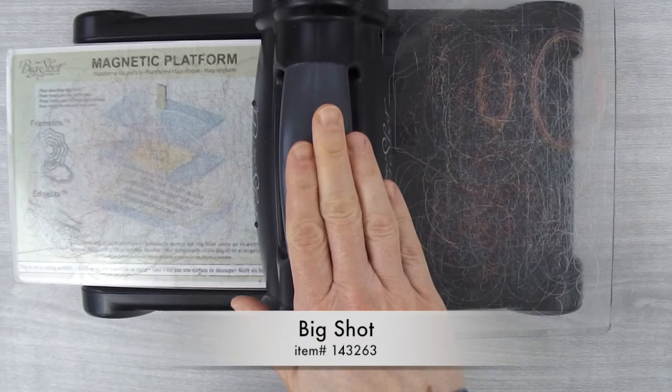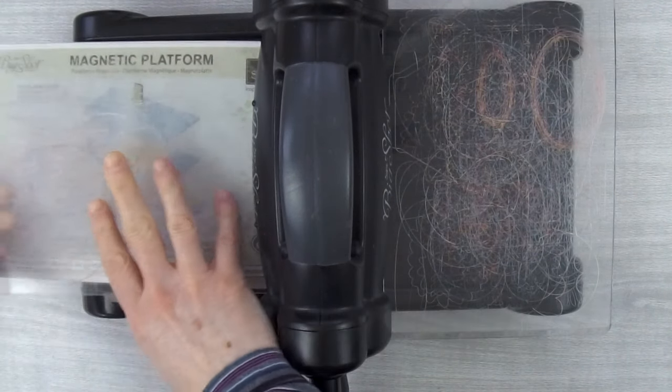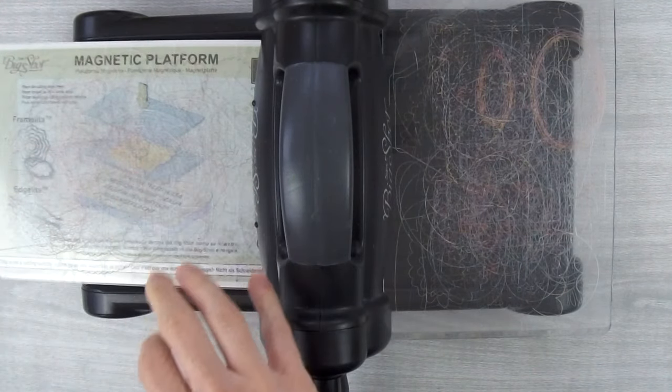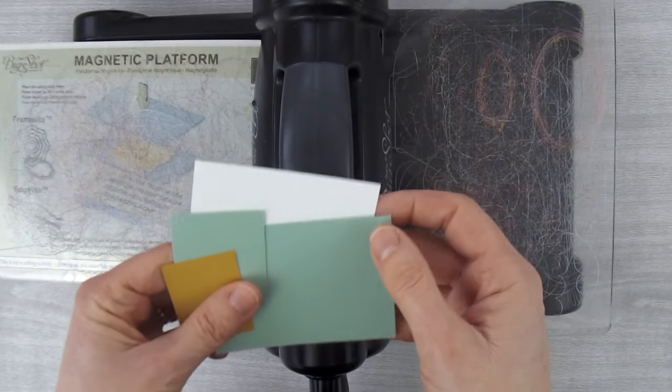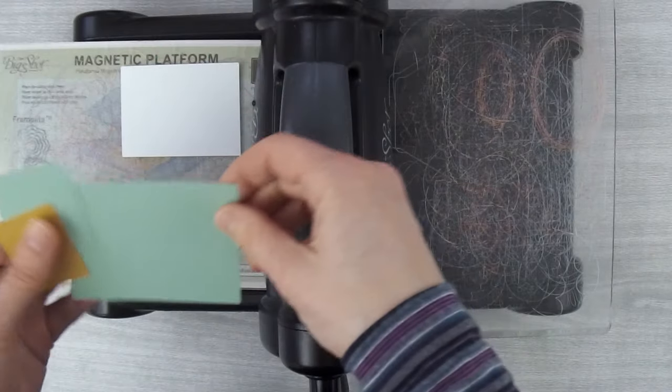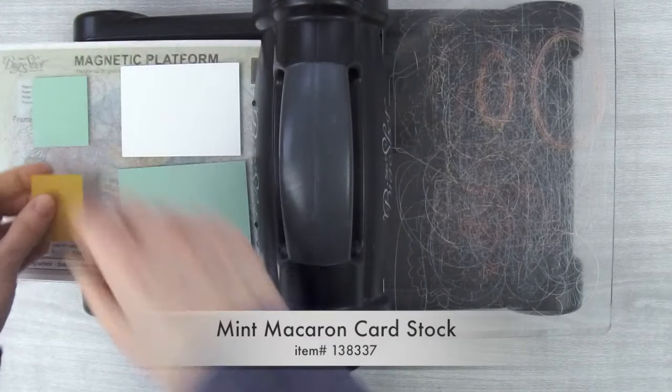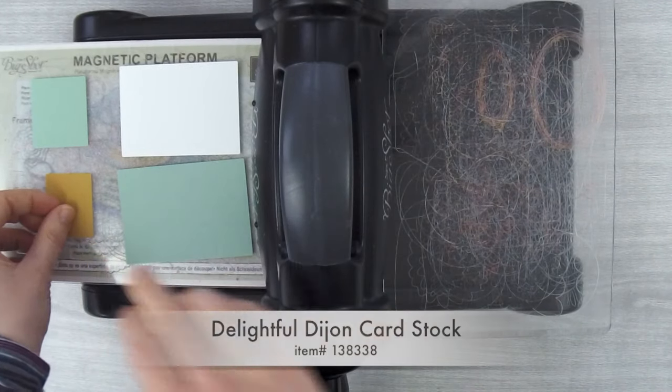To begin you're going to need your Big Shot and I've got my magnetic platform on here and a cutting plate already down. You're going to need some scrap pieces of cardstock. I've got a piece of Thick Whisper White, a piece of Mint Macaron, another piece of Mint Macaron and a piece of Delightful Dijon.